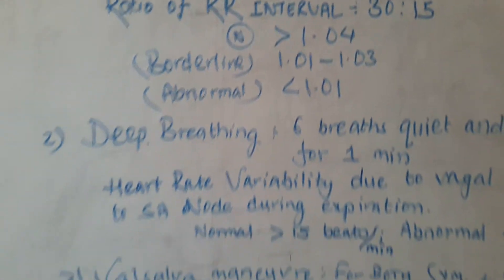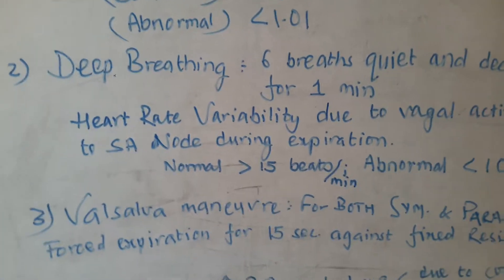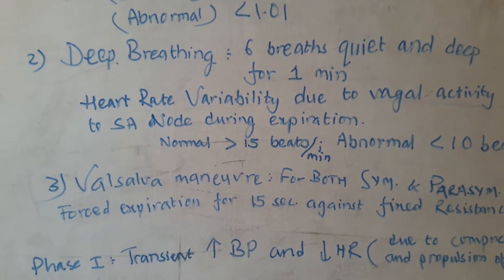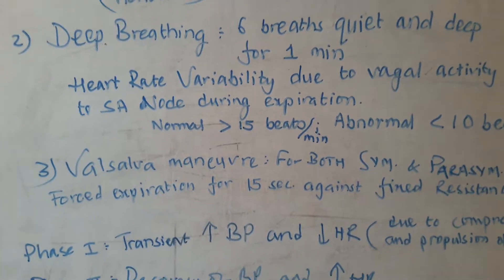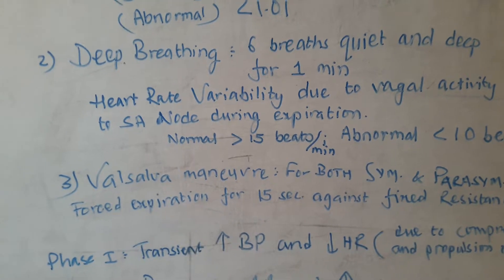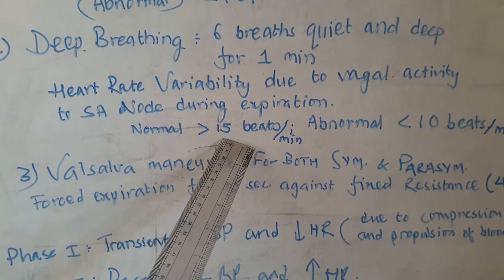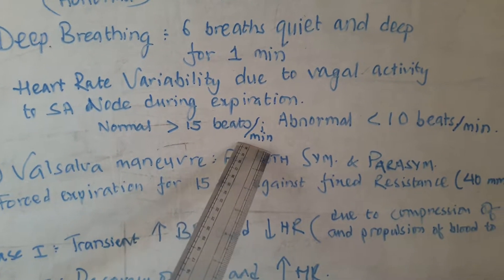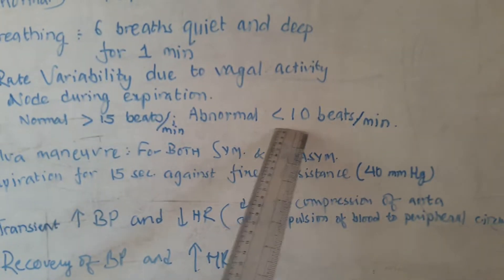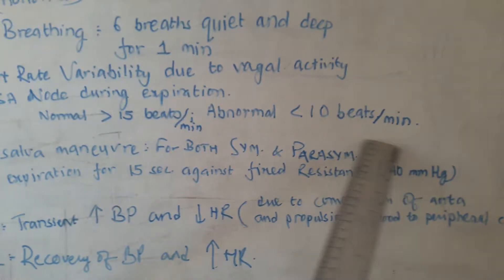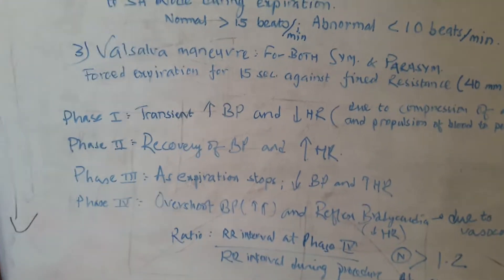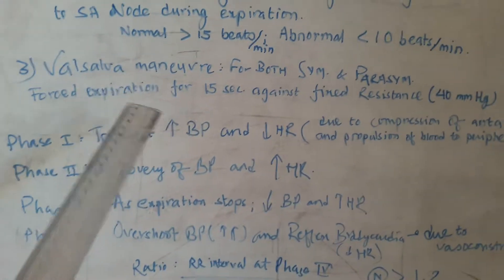The next test is the deep breathing test. In this test we ask the patient to take six breaths, quiet and deep, for one minute, and we measure heart rate variability. Normally the patient should have heart rate variability of more than 15 beats per minute, but those who have autonomic dysfunction have heart rate variability of less than 10 beats per minute.